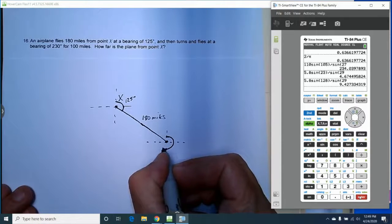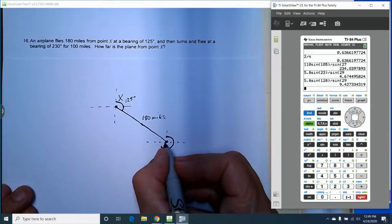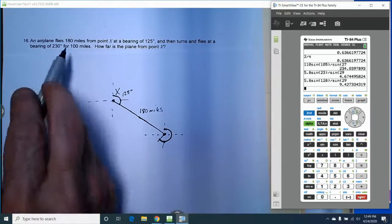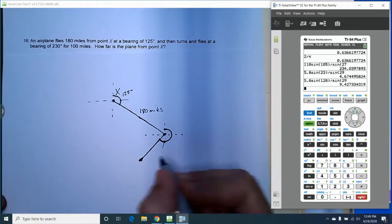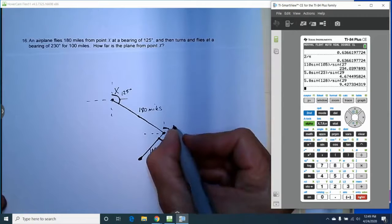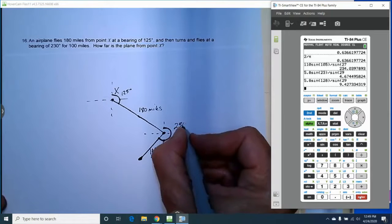So we're going here to 180 degrees and another 50 degrees puts us about there. So it's going to go another 100 miles at that bearing. So there's where it stops and this would be 100 miles. And this angle is 230 degrees.